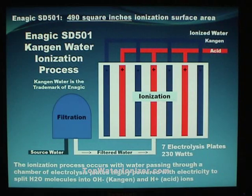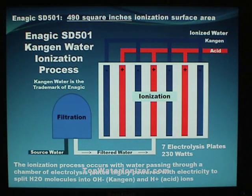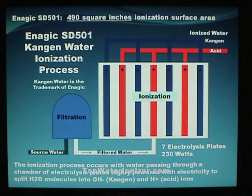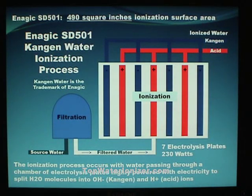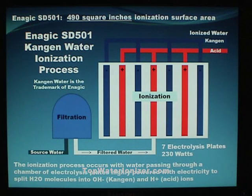This diagram illustrates the basic ionization process within the SD501 Kangen water ionizer. The water is first filtered and then presented to the ionization plates. The Enagic SD501 has an incredible seven electrolysis plates with 490 square inches of surface area, and it is powered by 230 watts of electricity. Upon going through the ionization chamber, the water is separated into two outputs: one is the Kangen water, which is alkaline, and the other is the acid water. Please note the seven plates powered by the 230 watts of electricity for a very powerful ionization process.